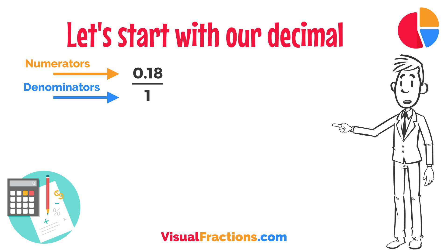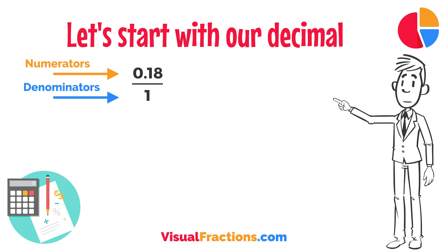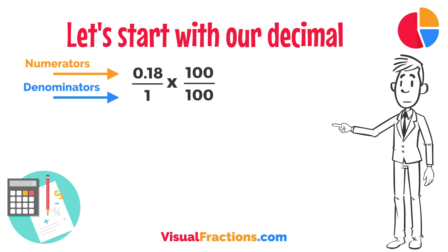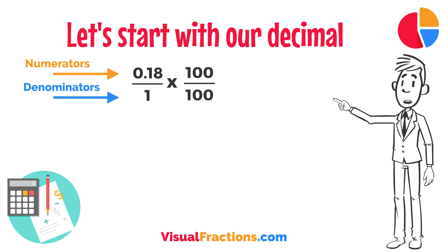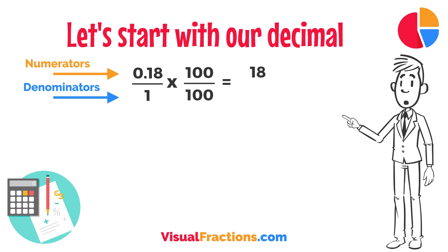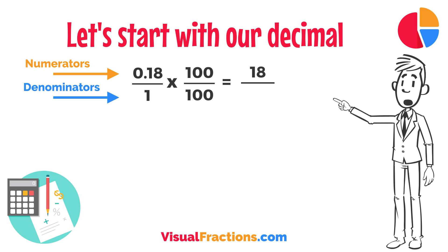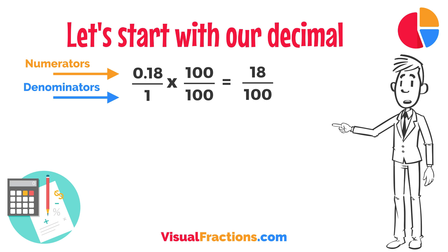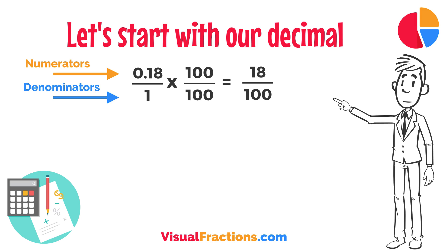We multiply both the numerator (the decimal) and the denominator (1) by 100, because there are two decimal places. So 0.18 times 100 gives us 18, and 1 times 100 gives us 100. This translates 0.18 to the fraction 18 over 100.